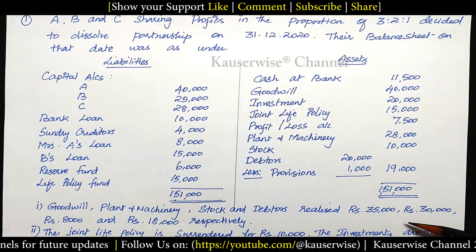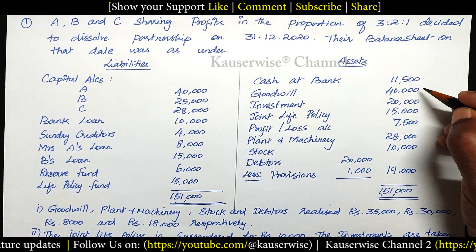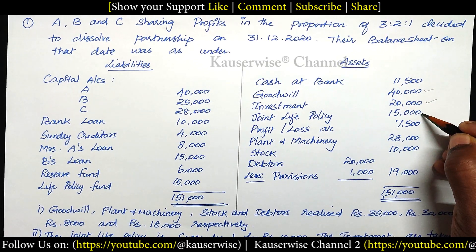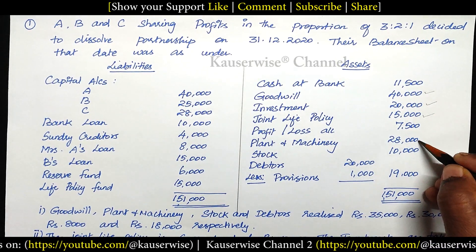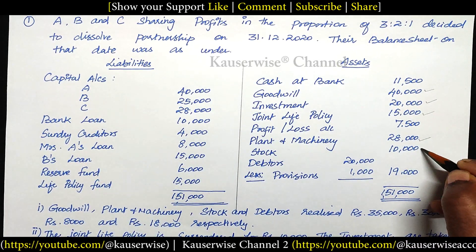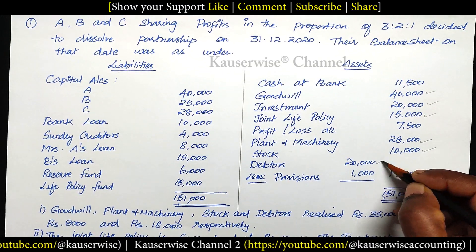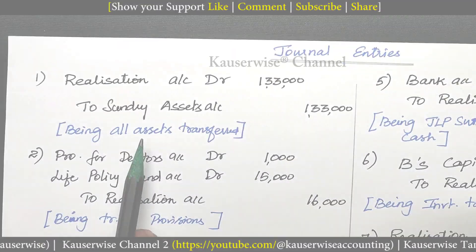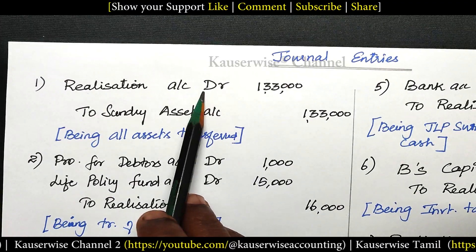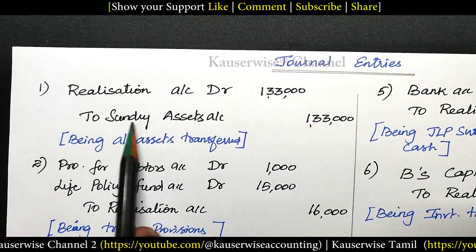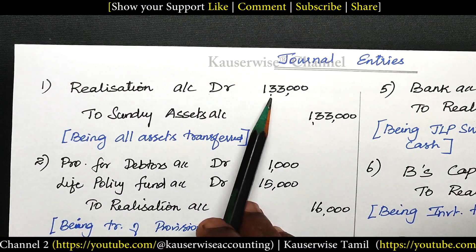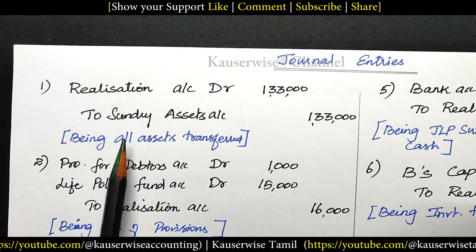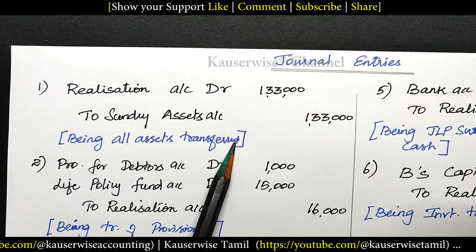According to this problem, the assets we need to transfer are: goodwill, investment, joint life policy, plant and machinery, stock and debtors. The first entry is: Realization Account Dr. to Sundry Assets — total rupees 1,33,000 — being all assets transferred.